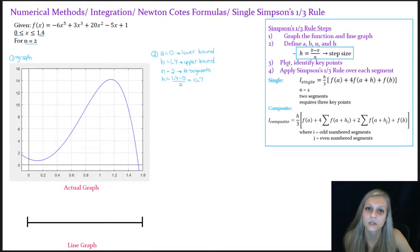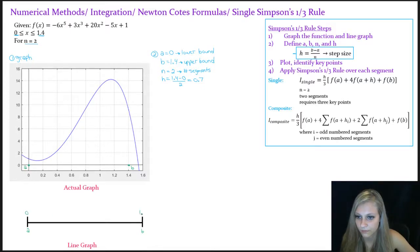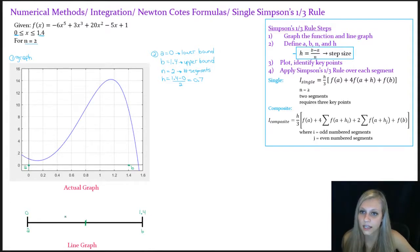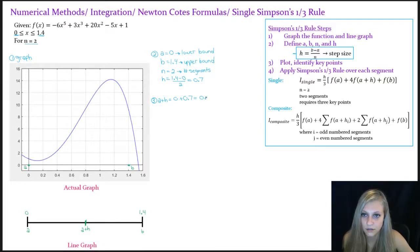The third thing I need to do is plot and identify key points. I'll start by plotting my upper bound and my lower bound. I know I need two segments, and if each segment is H distance long, then the internal boundary will be located at A plus the step size, or A plus H. So that will be 0 plus 0.7, which is 0.7, right in the center.